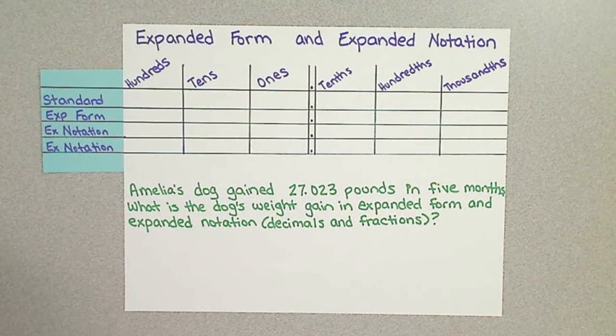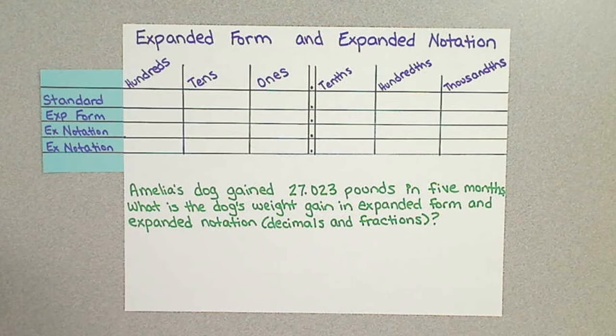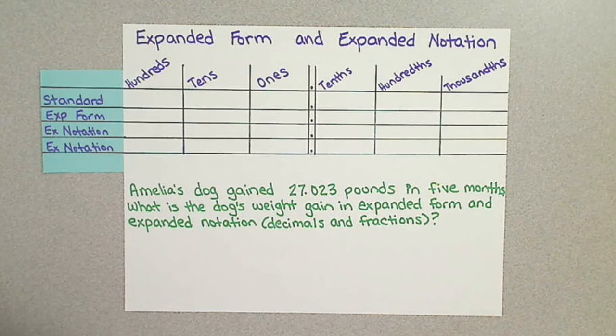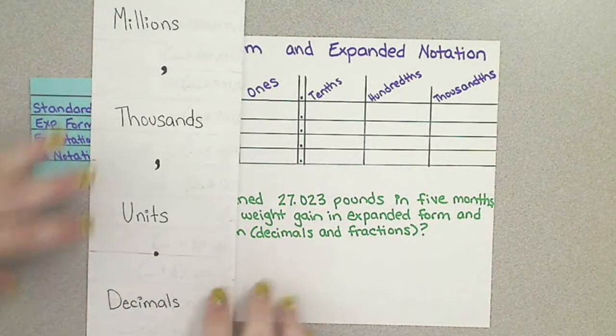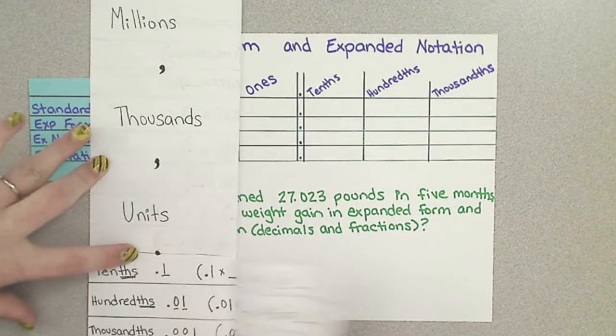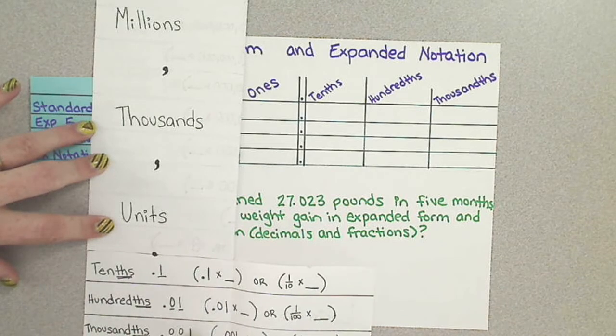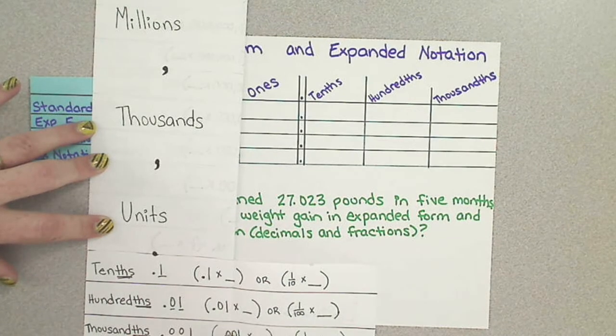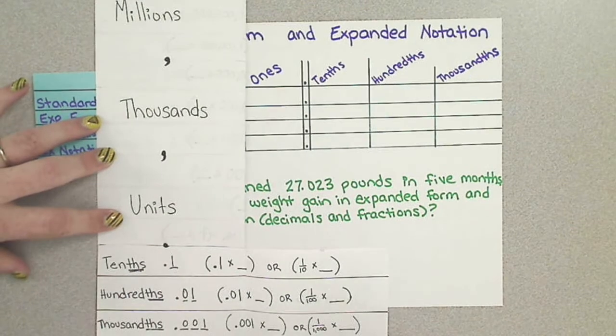Good morning everyone and welcome back to another beautiful day. Today we're going to be looking at the difference between expanded form and expanded notation. With expanded notation we're going to be looking at decimals and fractions. If you remember back to the first video, you created a foldable that has the breakdown for the decimals: standard form, expanded form, expanded notation for decimals, and expanded notation for fractions. Don't forget that you have this as a resource if you need it.